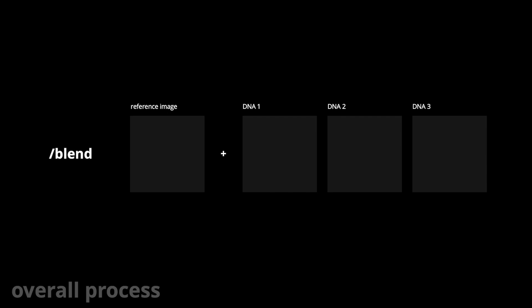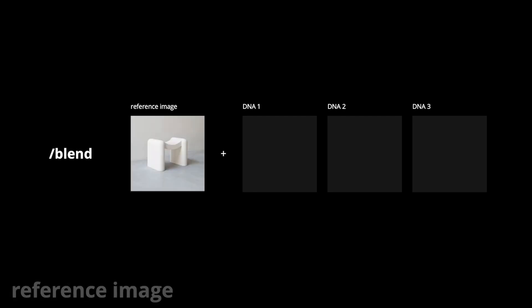This process actually uses Blend 2 to blend one reference image and up to three DNA images. The reference image is an existing piece of furniture that sets the overall form and camera angle. This reference image should have a plain background, as it helps to keep the composition simple and realistic.